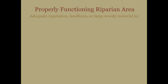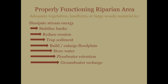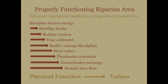Our definition of functioning condition involves having enough stuff — vegetation, landform, and large woody material — to first and foremost dissipate stream energy. Then, and only then, do we begin to have stable banks, reduced erosion, sediment trapping, enlarged floodplains, stored water, floodwater retention, groundwater recharge, and sustained base flow. It is physical function that produces the values that we appreciate and demand from creeks and rivers. This is the key concept: physical function leads to values.